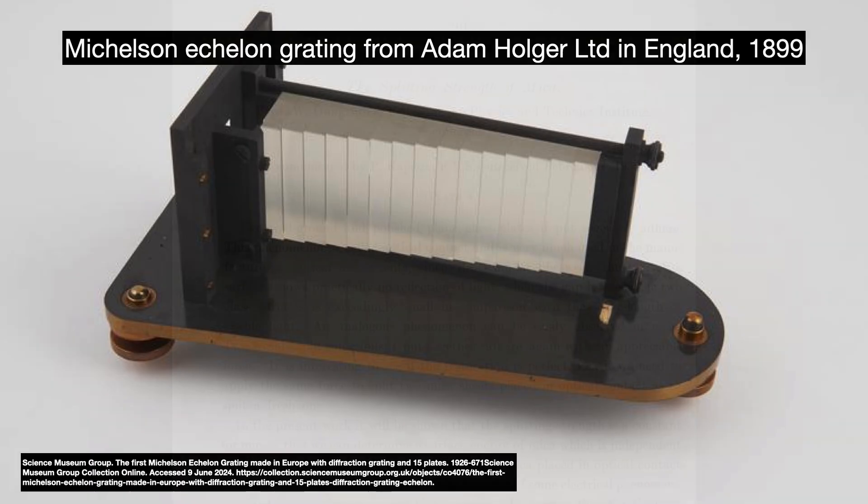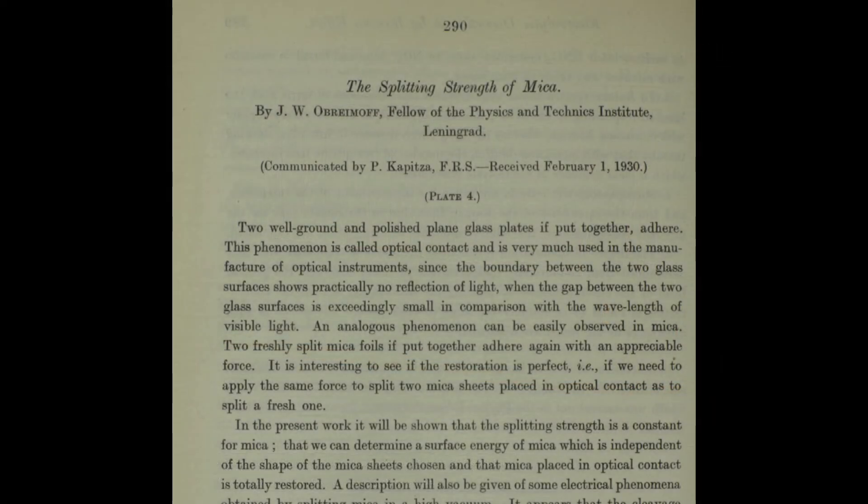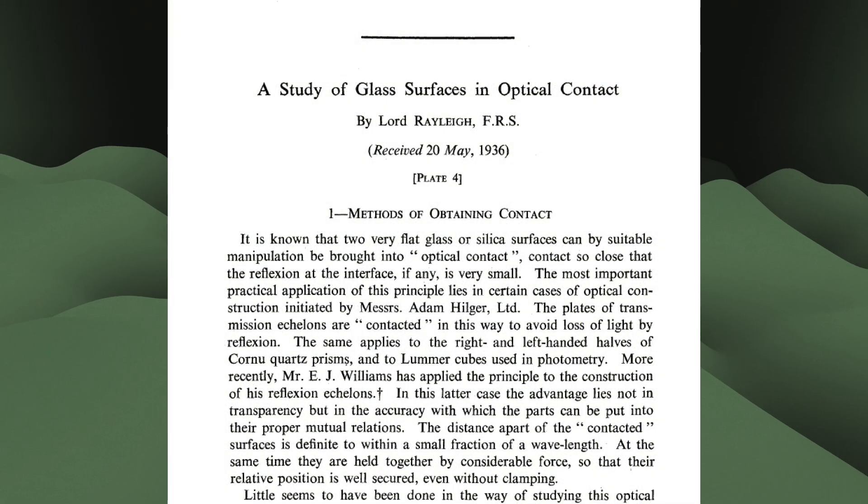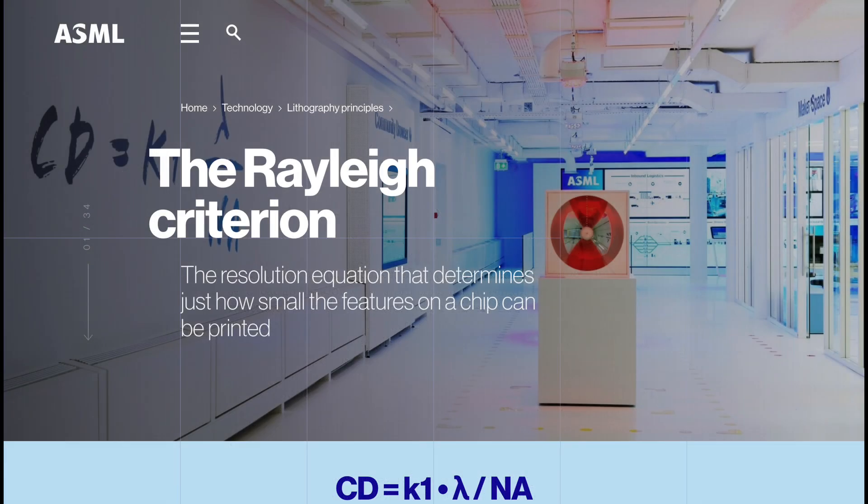Thus the first scientific studies done in the 1930s were optical related. First by J.W. Abrikosov out of St. Petersburg in 1930, who studied the same effect in mica, a silicate. And then John William Strutt, 3rd Baron Rayleigh in 1936. Yes, the Lord of Lithography himself. His paper studied two forms of the optical bonding phenomenon and discovered that they were the same thing.